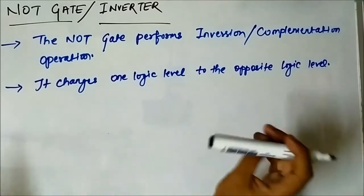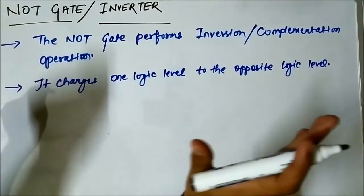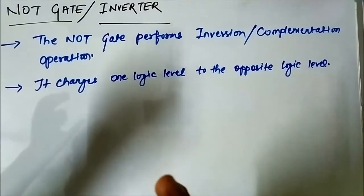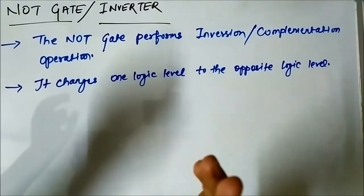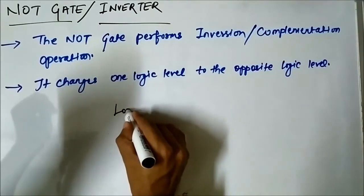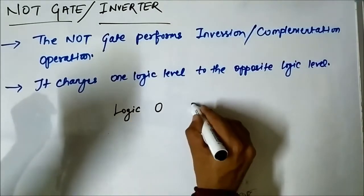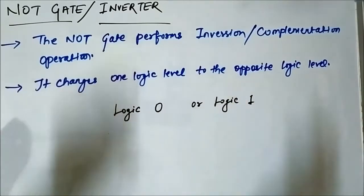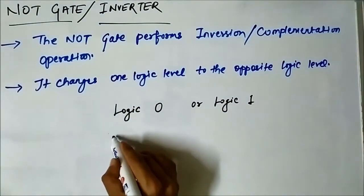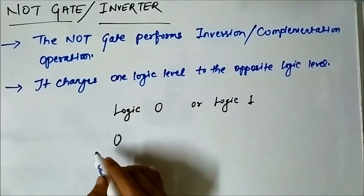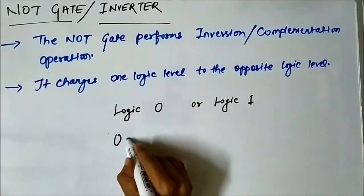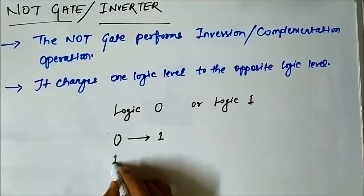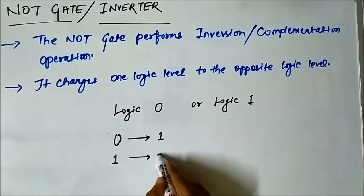In digital circuits or Boolean algebra there are only two values which a logic variable or Boolean variable can take: logic 0 or logic 1. So what the NOT gate does is that if a logic 0 is applied at its input it will change it to logic 1, and if a logic 1 is applied at its input it will change it to logic 0.